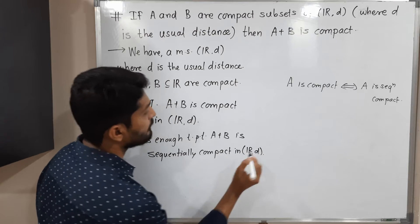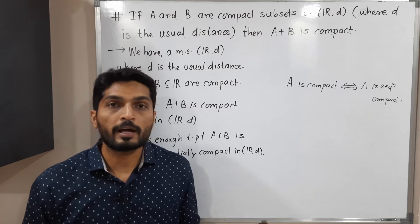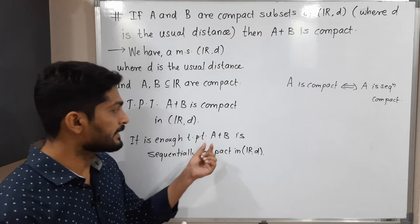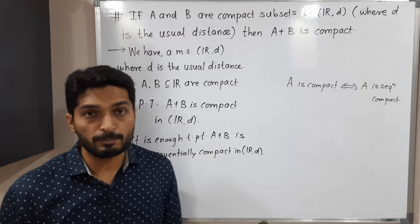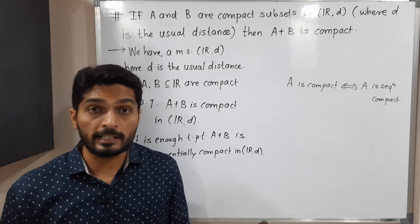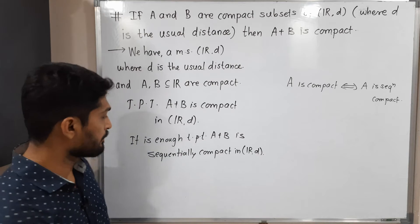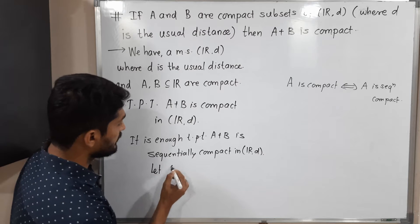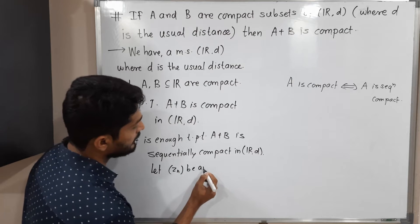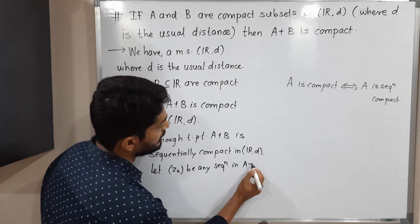What is the meaning of sequentially compact? It means for every sequence we should have a convergent subsequence. So we have to take any sequence in A plus B and prove that it has a convergent subsequence — then we can declare it is sequentially compact. So let us take one sequence: let Zn be any sequence in A plus B.